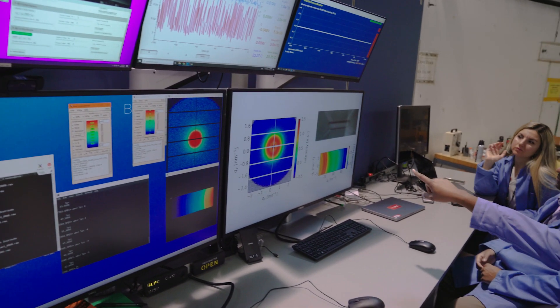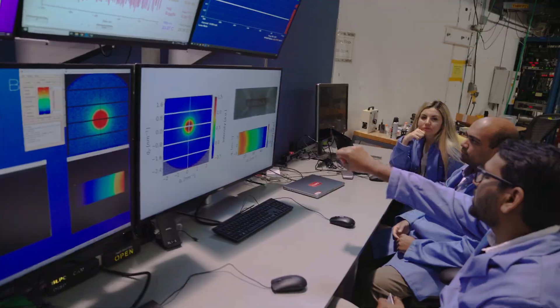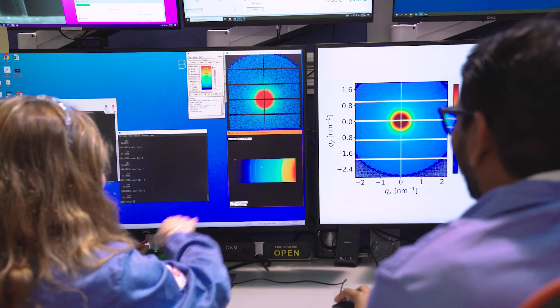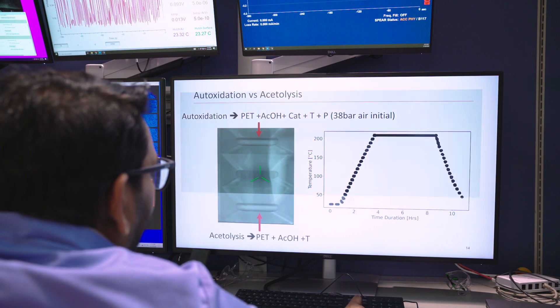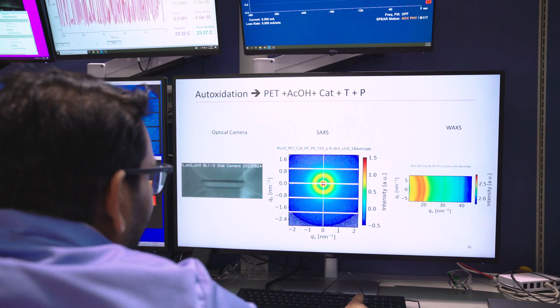The understanding we achieve from watching chemical and biological processes at the molecular and atomic scale is at the heart of developing processes to turn today's waste into tomorrow's products. This will enable a future where the end of today's plastics life is the start of tomorrow's plastic products.